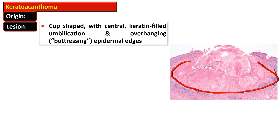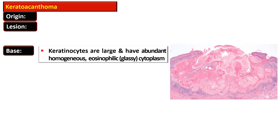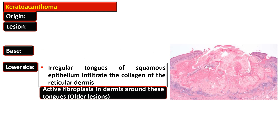Keratoacanthoma originates from the endophytic proliferation of keratinocytes. This is a cup-shaped lesion with a central keratin-filled invagination and overhanging epidermal edges. The base is composed of keratinocytes that are large and have abundant homogeneous eosinophilic or glassy cytoplasm. The lower side of the lesion has irregular tongues of squamous epithelium that infiltrate the collagen of the reticular dermis.